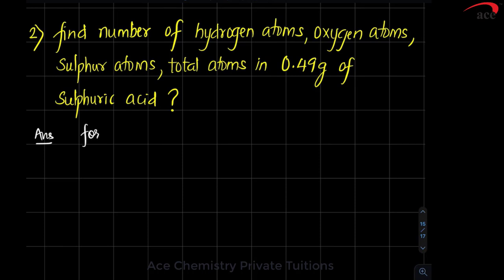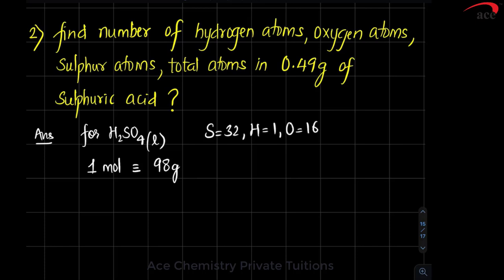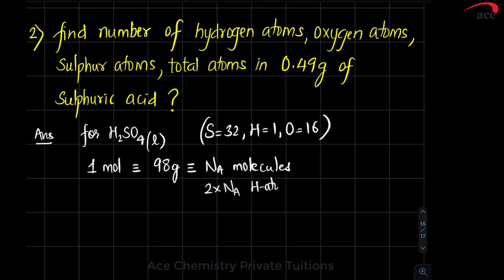For sulfuric acid: sulfuric acid is a liquid. One mole of sulfuric acid is 98 grams (sulfur is 32, hydrogen is 1×2, oxygen is 16×4 = 64, total 98), and it has NA molecules. We are interested in hydrogen, oxygen, and sulfur. Hydrogen: 2 × NA hydrogen atoms. Oxygen: 4 × NA oxygen atoms. Sulfur: 1 × NA sulfur atoms.